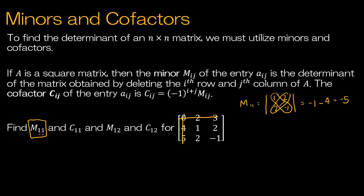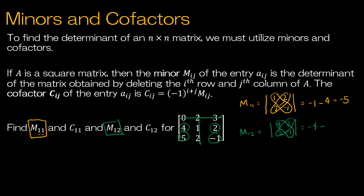For M(1,2) — first row, second column — we remove row 1 and column 2, leaving: 4, 2, 5, negative 1. Finding the determinant using diagonals: 4 times negative 1 is negative 4, minus 5 times 2 which is 10, so the minor M(1,2) is negative 14. Minors are great, but really what we want is the cofactor.